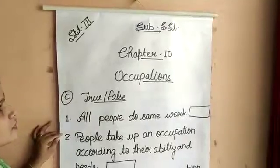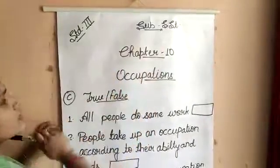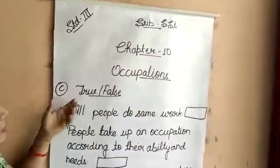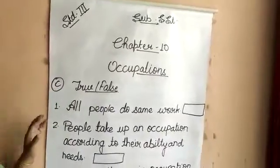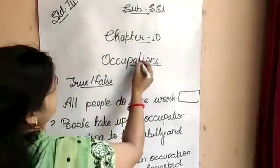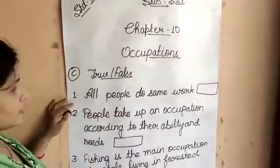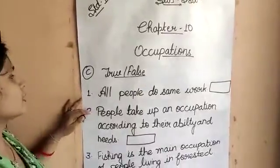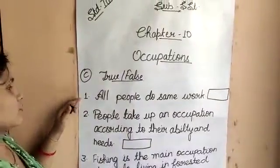Good morning students. Today I will teach you SST Standard 3rd, Chapter 10: Occupations. In the last class we read the correct options, and today's work is True and False.